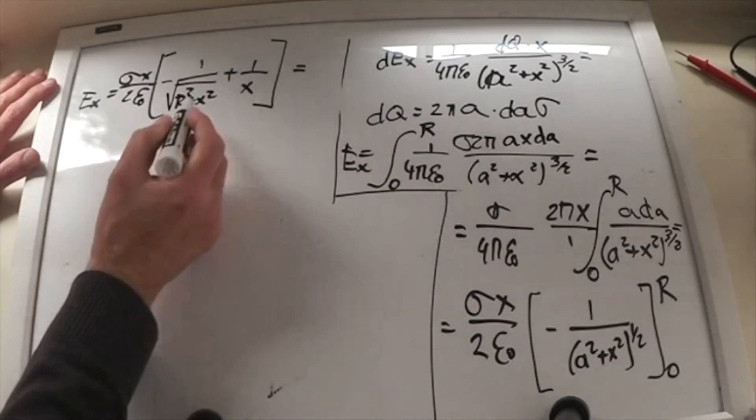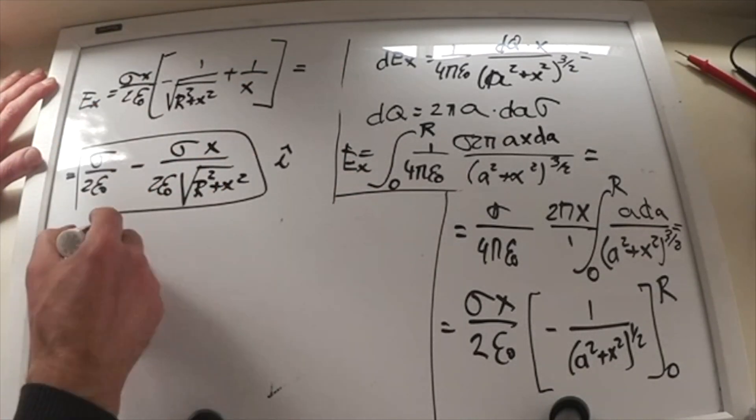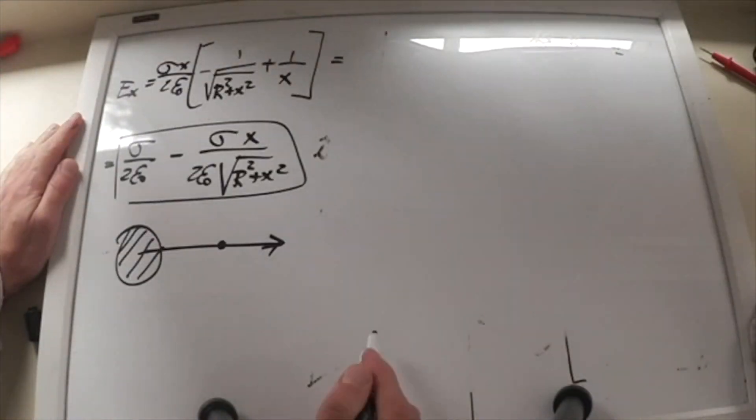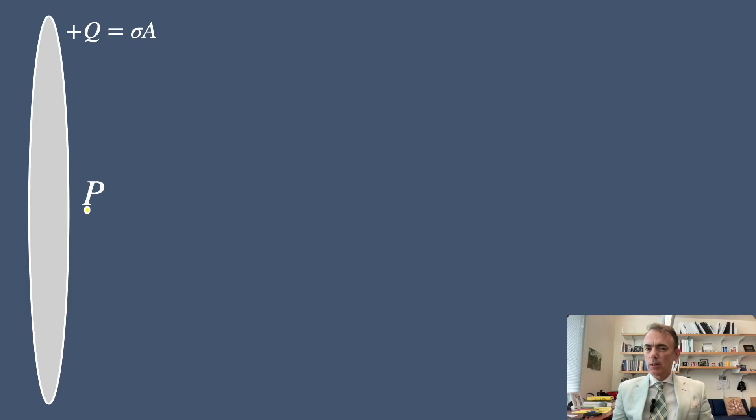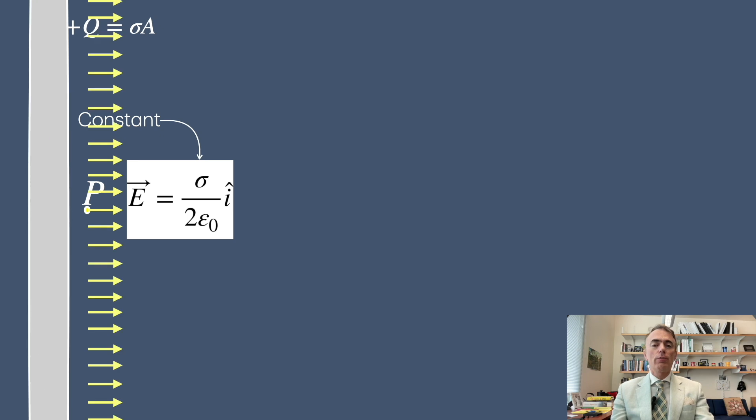But first let's do a quick recap. Previously we calculated the electric field produced by a disk of charge, a disk with a uniform surface charge distribution, and at a point very close to the disk the electric field is approximately constant and behaves like the field of an infinite sheet of charge.